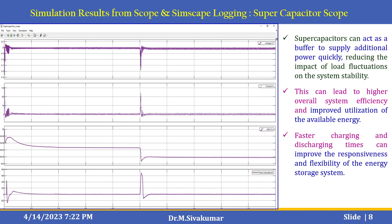Let us see the output scope. This scope is called the supercapacitor scope. By incorporating the supercapacitor along with the bi-directional DC-DC converter and MPPT P&O algorithm, it acts as a buffer to supply additional power quickly, reducing the impact of load fluctuations on system stability. This leads to higher overall system efficiency and improved utilization of available energy. You can also see the fast charging and discharging times, which improve the responsiveness and flexibility of the energy storage system.